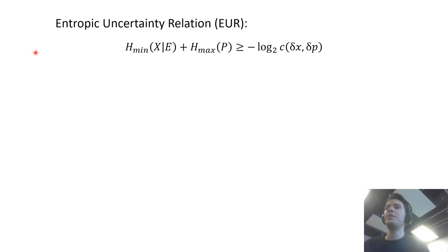Now from this relation you see that you can easily lower bound the conditional min entropy by this quantity which we'll call in the following H_min. So this lower bound can be estimated by just measurement of the P quadrature and it allows you to estimate the conditional min entropy on measurement of the X quadrature.